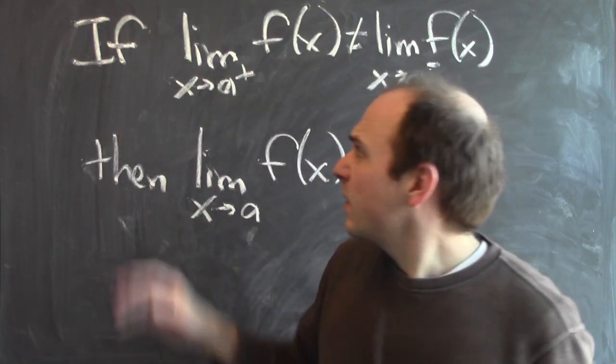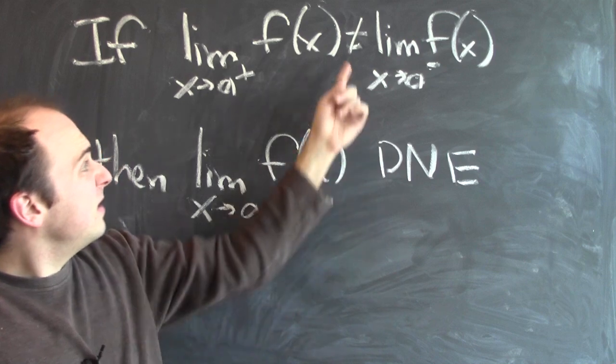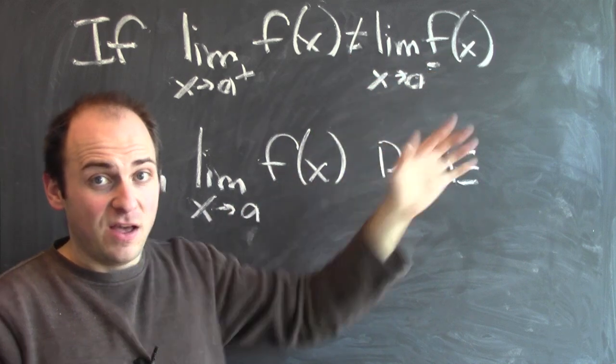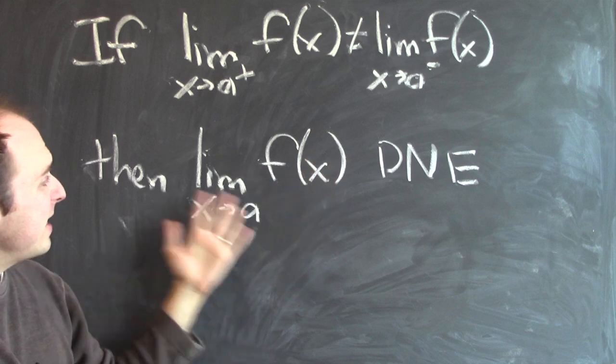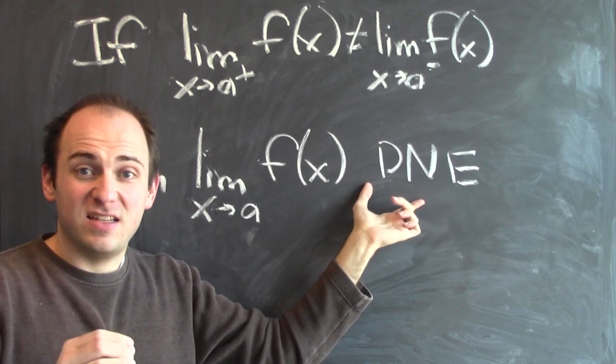We can summarize it like this. If the limit of f of x as x approaches a from the right is different than the limit of f of x as x approaches a from the left, then the two-sided limit, the limit of f of x as x approaches a, does not exist.